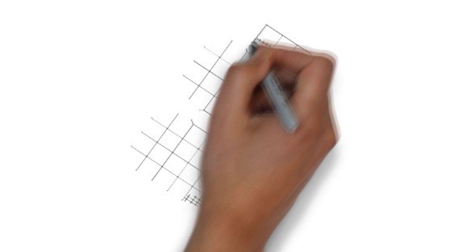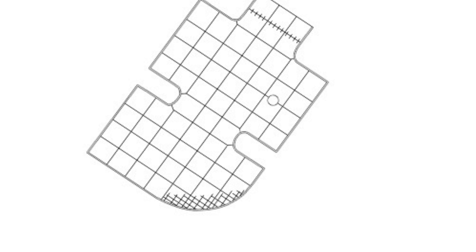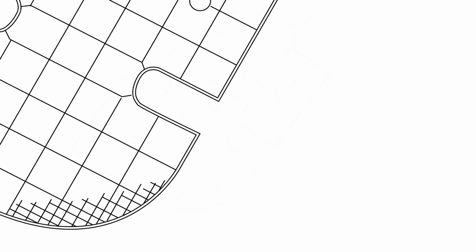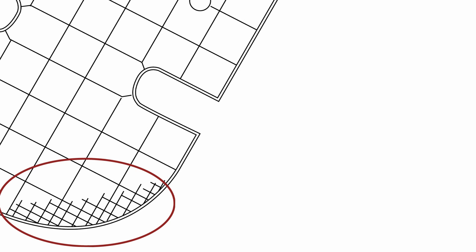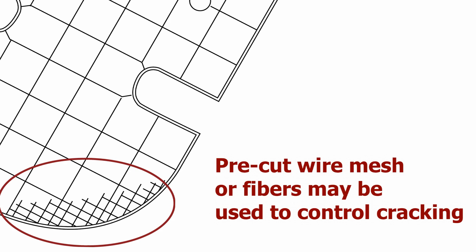Concrete naturally wants to crack in squares. The jointing pattern should be cut as close to squares as possible. Where it is not possible, the length of the panel should not exceed more than 25% of the width. For irregular shaped panels where the angles would be less than 45 degrees, pre-cut wire mesh or fibers may be used to control cracking.